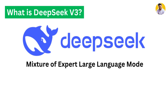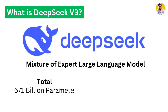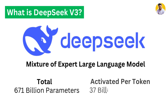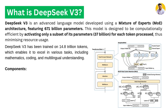DeepSeek V3 has 671 billion parameters and is designed to be computationally efficient by activating only a subset of its parameters — that is 37 billion — to process each token, thus minimizing resource usage. DeepSeek V3 was trained on over 14.8 trillion tokens, which enabled it to excel in various tasks.